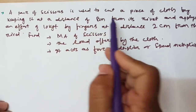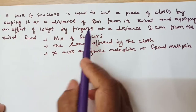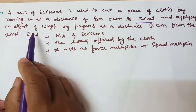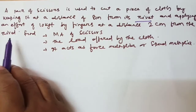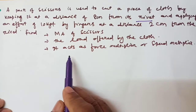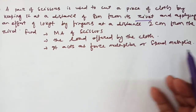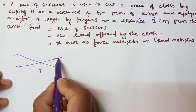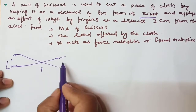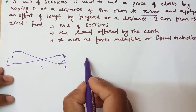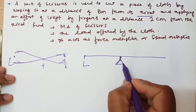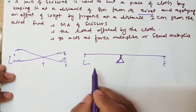Next numerical: a pair of scissors is used to cut a piece of cloth by keeping the cloth at a distance of 8 cm from its rivet (the fulcrum), and applying an effort of 10 kgf at a distance of 2 cm from the rivet. Scissors have load, fulcrum in the middle, and effort — this is a class 1 lever.